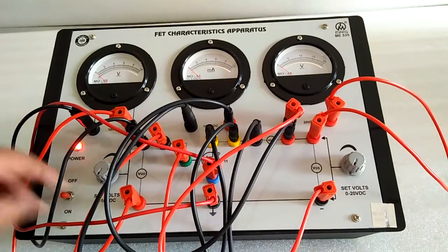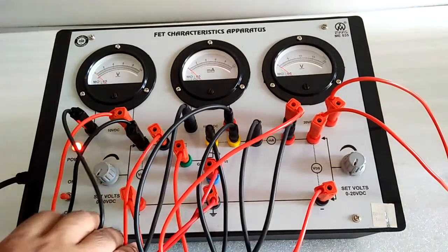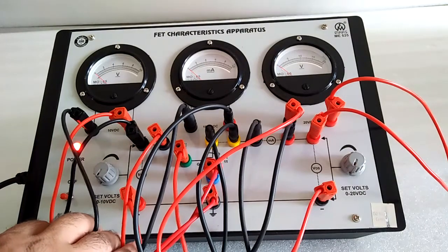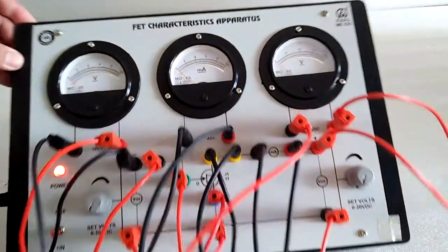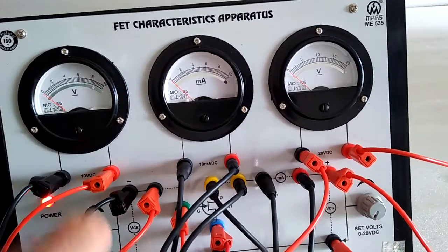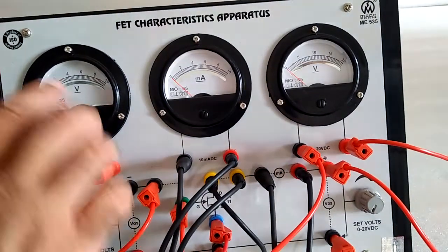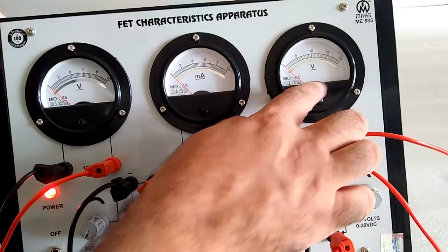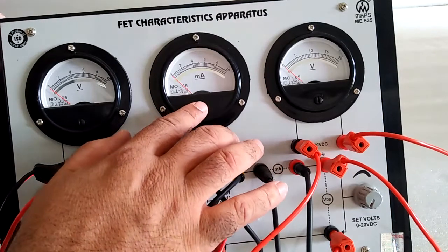Switch on the supply. Set the VGS at any value, suppose it is on zero. Now increase the voltage and simultaneously note down the current.